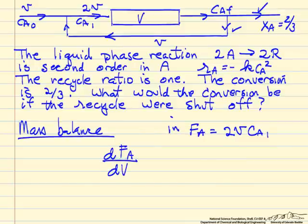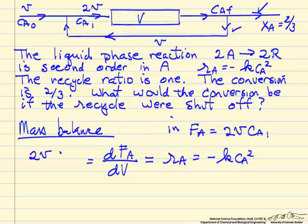The change in this flow rate with respect to the cumulative volume is the rate of reaction, RA, which in the problem statement is given as minus k Ca squared. The stoichiometric coefficient is built into the rate constant. It's a liquid phase system, so the volumetric flow rate is constant, so I can write this as 2 times the volumetric flow rate, the change in the concentration with respect to volume.